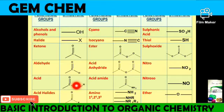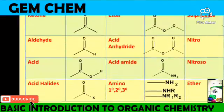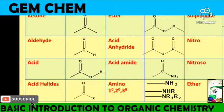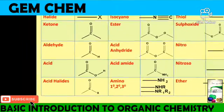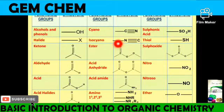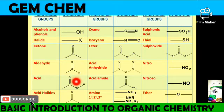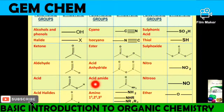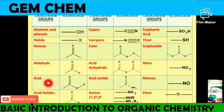Next comes the acid group, where a carbonyl group is attached with an –OH group. Acid halide has a C=O group attached with X (halogen). The cyano group is C≡N, and the isocyano group is N≡C, which is the opposite. The ester group is an acid group with one extra –O–. Acid anhydride has two carbonyl groups attached with an oxygen in between.